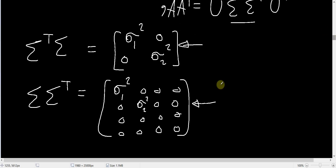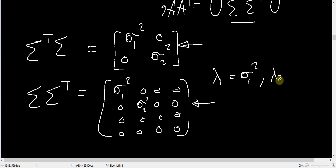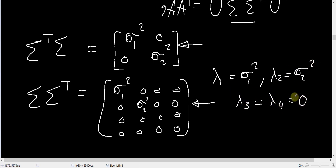For the matrix Σ Σ^T, which is a 4 by 4 matrix, we have four eigenvalues. The first equals σ₁², the second equals σ₂², and the third and fourth are both equal to 0. So the remaining eigenvalues of the larger of the two matrices will be 0.